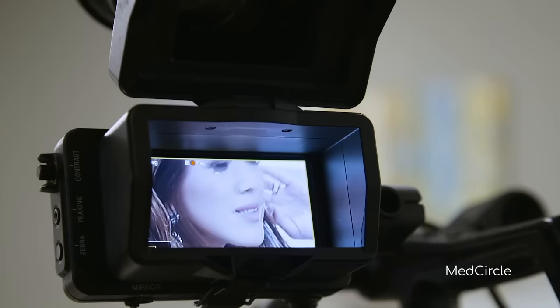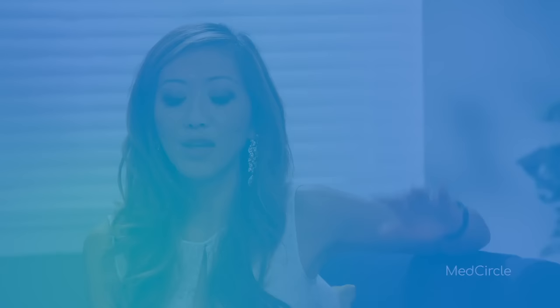Everybody has their own style of bonding emotionally with the people in their lives. This is called attachment style, and it plays a central role in the healthiness of our relationships. Neuropsychologist Dr. Judy Ho is an expert in attachment theory, and in this series she explains the types of attachment styles, where each one comes from, and how to recognize your own. Most importantly, she shares how to improve it to improve your relationships and enhance your mental wellness. So let's talk about attachment theory — where does it come from?